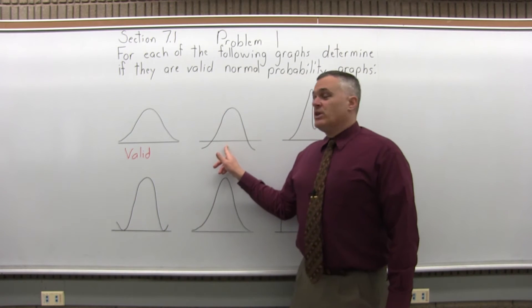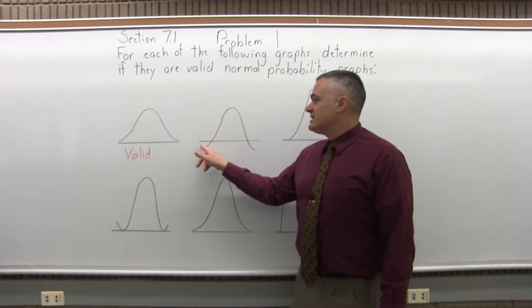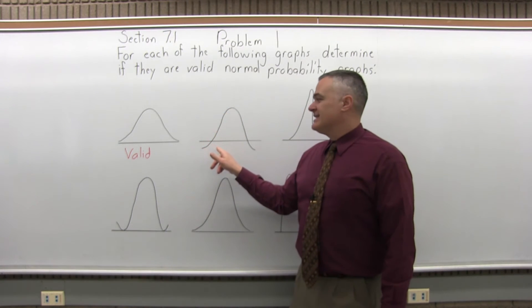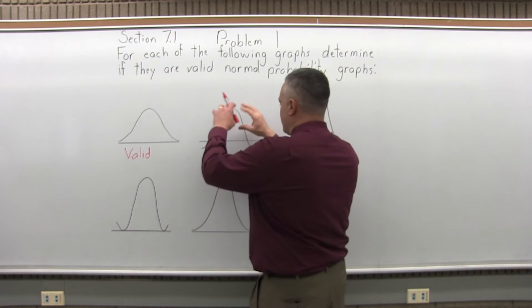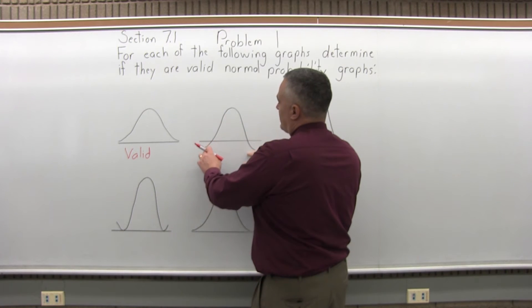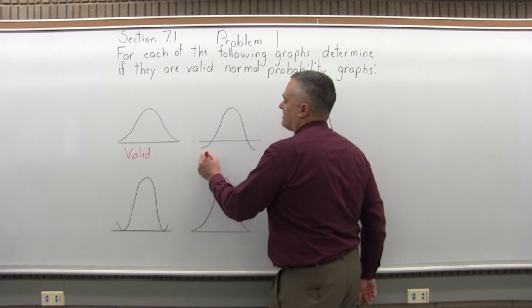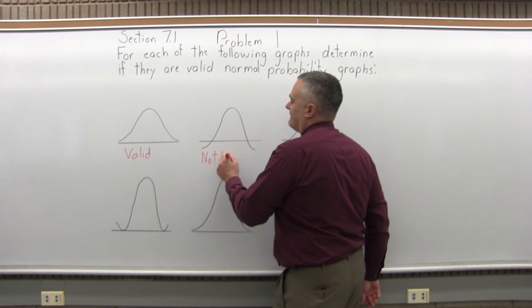The next one though, because the graph comes down and crosses the lines more than just touches it, it's not valid. It is symmetric. It has the right shape. But it can't cross the horizontal line underneath, so it is not valid.